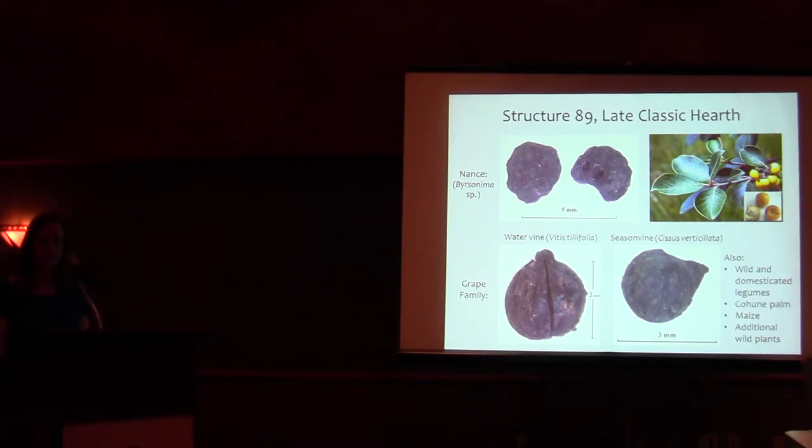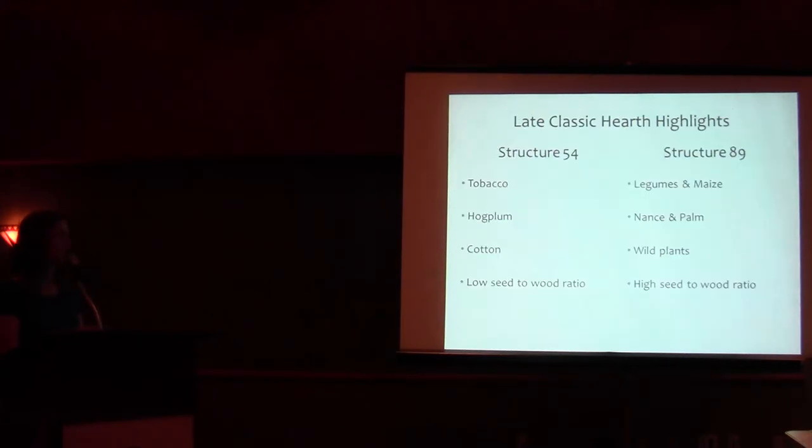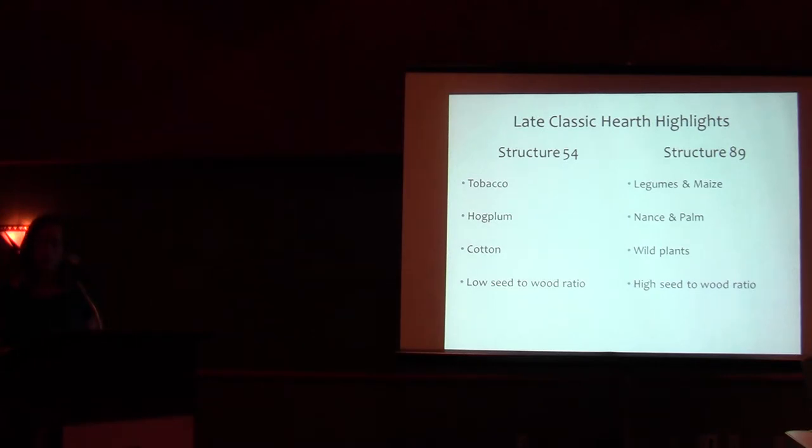In comparison, there is a marked difference between the content of the two late classic period hearths. The Structure 54 hearth contained a greater proportion of burnt wood, along with a limited sample of plants associated with ritual and consumption that were not found in the other hearth. The Structure 89 hearth contained remains from plant processing and food preparation, with a wide variety of wild and cultivated plant species represented.